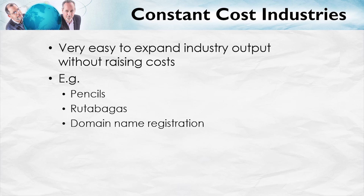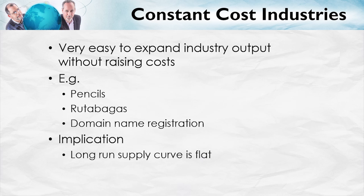Same thing with domain name registration. As the internet has expanded tremendously, it still costs about $6 or $7 to register a domain name, since it's very cheap to do that with just a few additional computers — a little bit more computer resources, a very small portion of the total number of computers — and we can increase the supply of domain name registrars very, very easily. The implication of all this is that long-run supply curves for goods like pencils, rutabagas, and domain name registration are going to be flat.